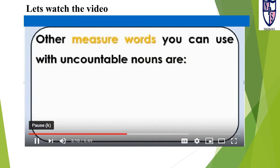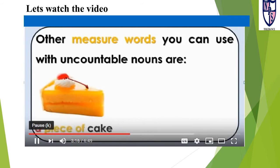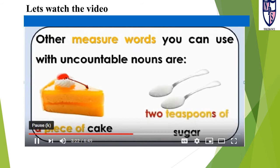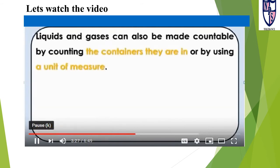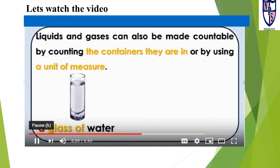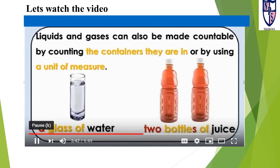Other measure words you can use with uncountable nouns include: piece — a piece of cake; spoon — two teaspoons of sugar. Liquids and gases can also be made countable by counting the containers they are in or by using a unit of measure. For example: a glass of water, two bottles of juice. Water and juice are uncountable nouns — we are not counting them, we are counting the containers they are in.